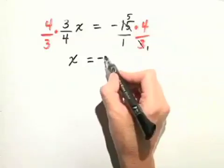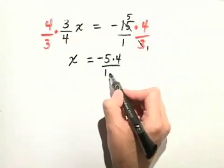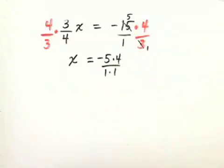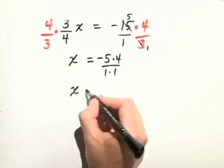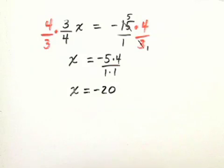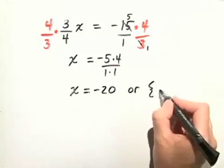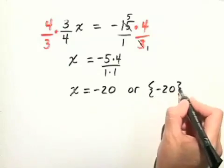So we really have negative 5 times 4 in the numerator over 1 times 1 in the denominator. This simplifies to x equals negative 20 over 1, or simply negative 20. We can write the solution set as negative 20.